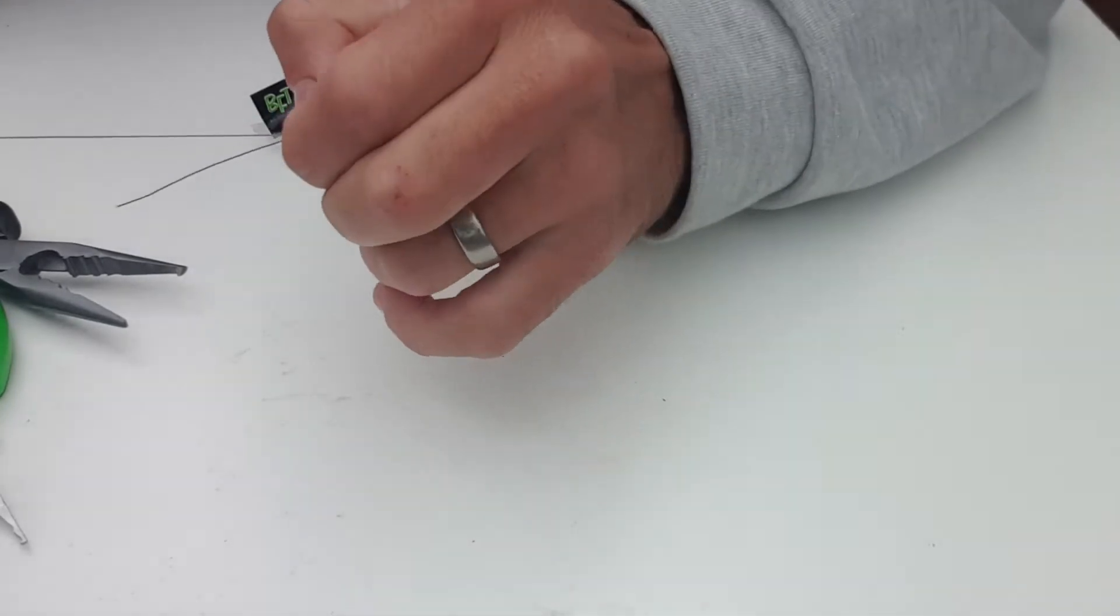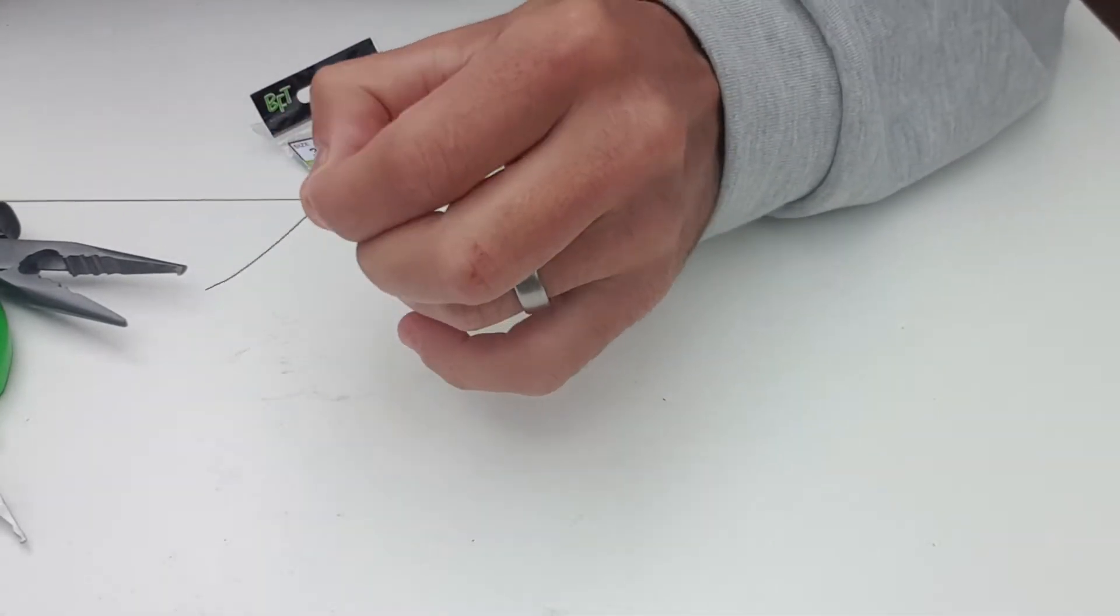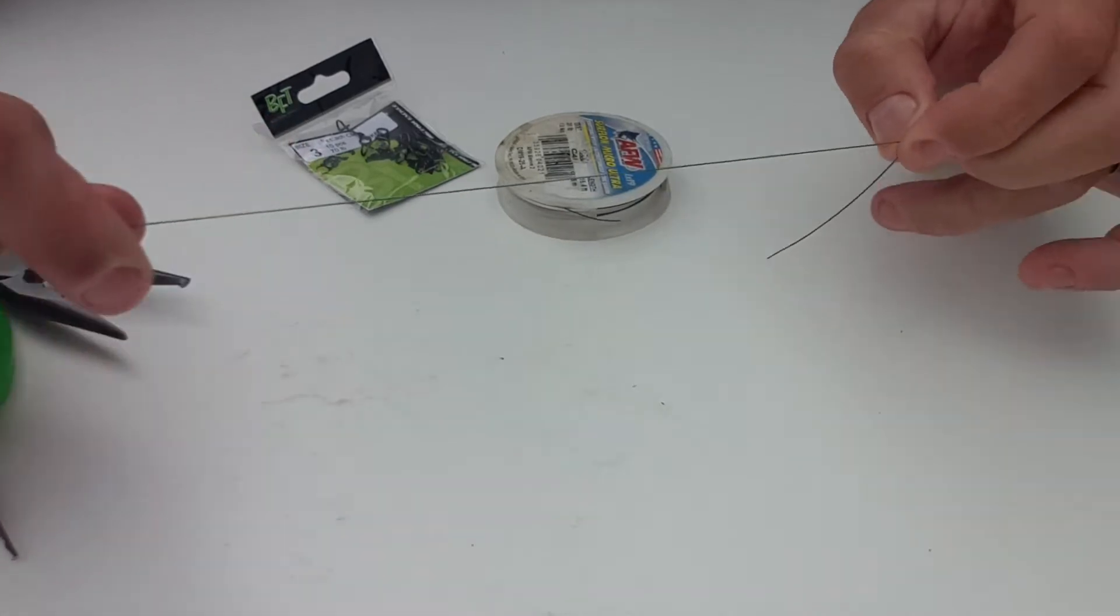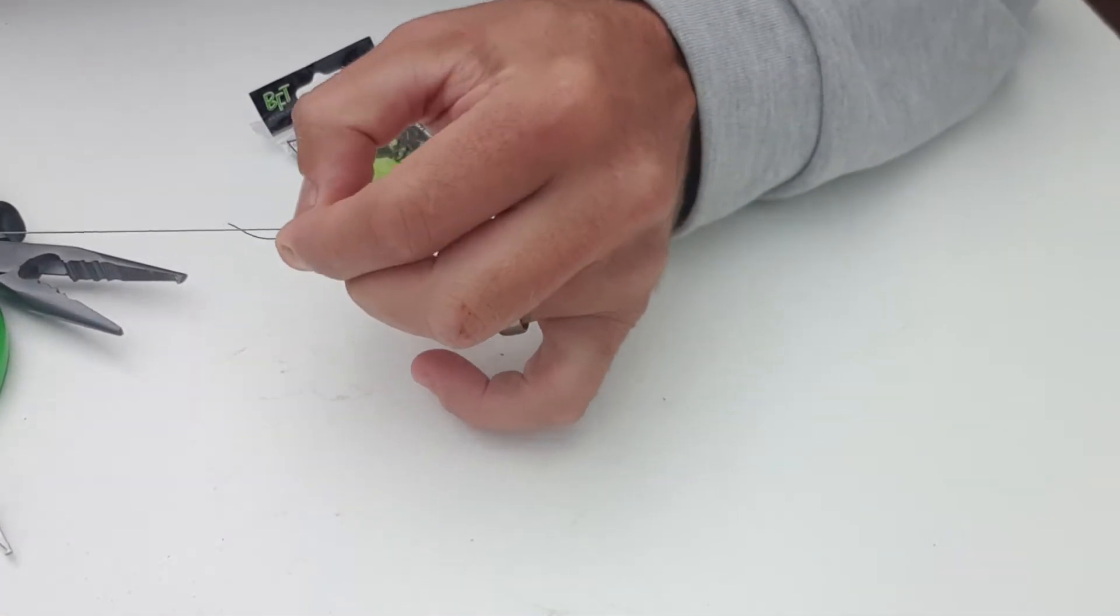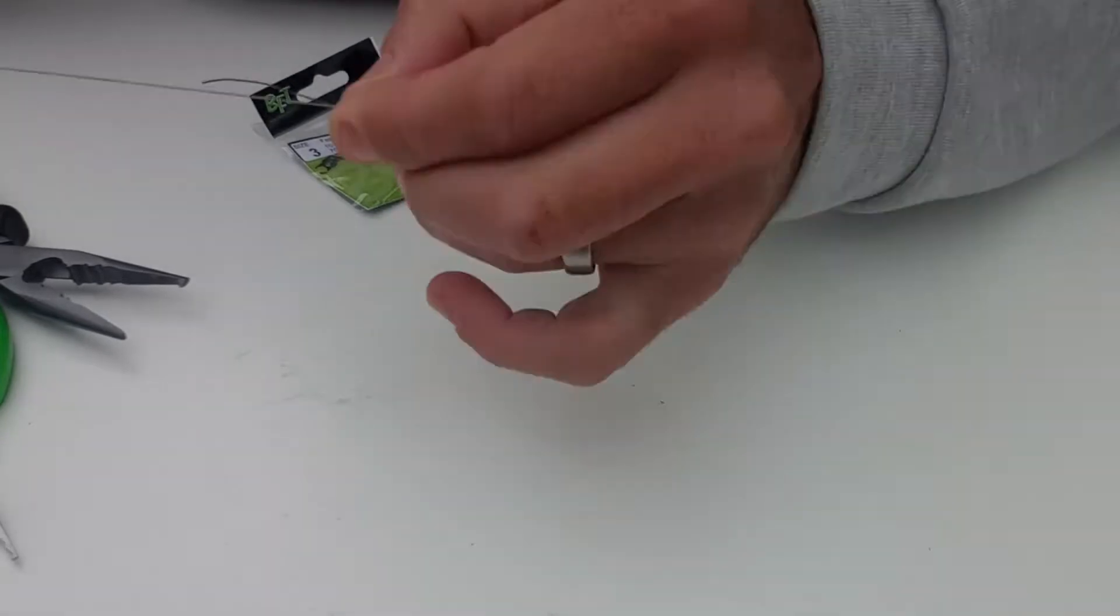And I'll just move it into place, I'll pull on the other end there with my other hand, move it in, pull it down as much as I can, give a little pull on the tag end until it's almost cinched.